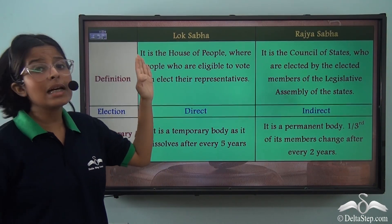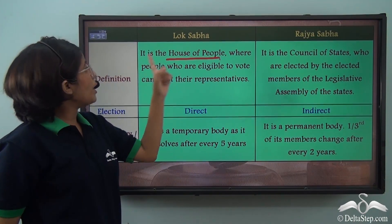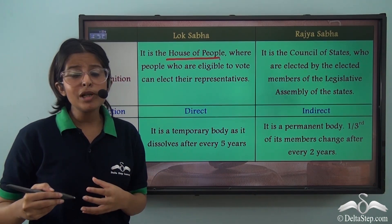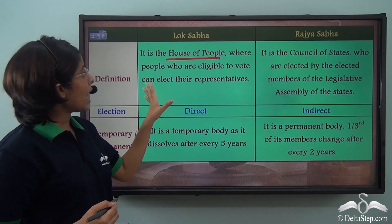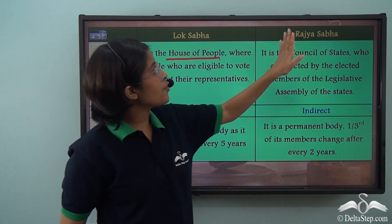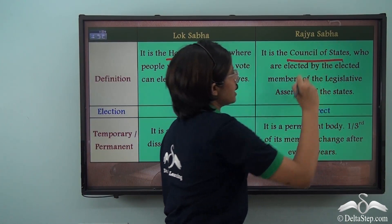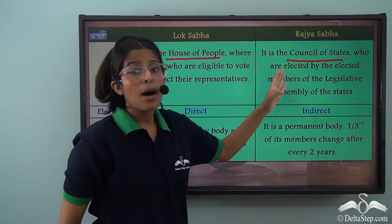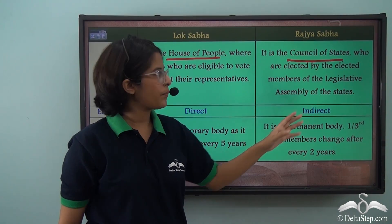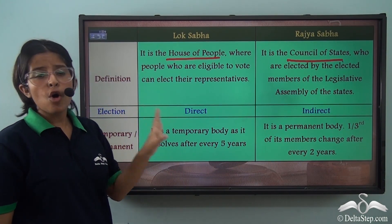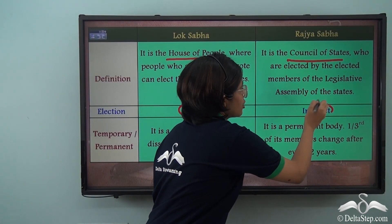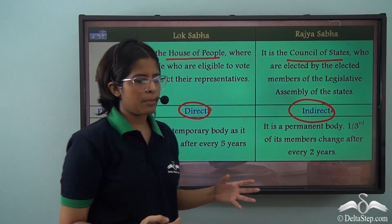The Lok Sabha is the house of the people, where Indian citizens above 18 years of age who are eligible to vote can elect their representatives through a direct election. The Rajya Sabha is the council of states, whose members are elected by the elected members of the Legislative Assemblies of the states, making it an indirect election.